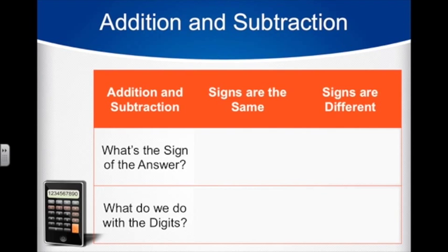First, if the signs are the same, your answer will always have the same sign, and you'll add the digits. You add the digits because if you have two positive values combined, you're just going to get more positive. If you have two negatives combined, you'll just get more negative.